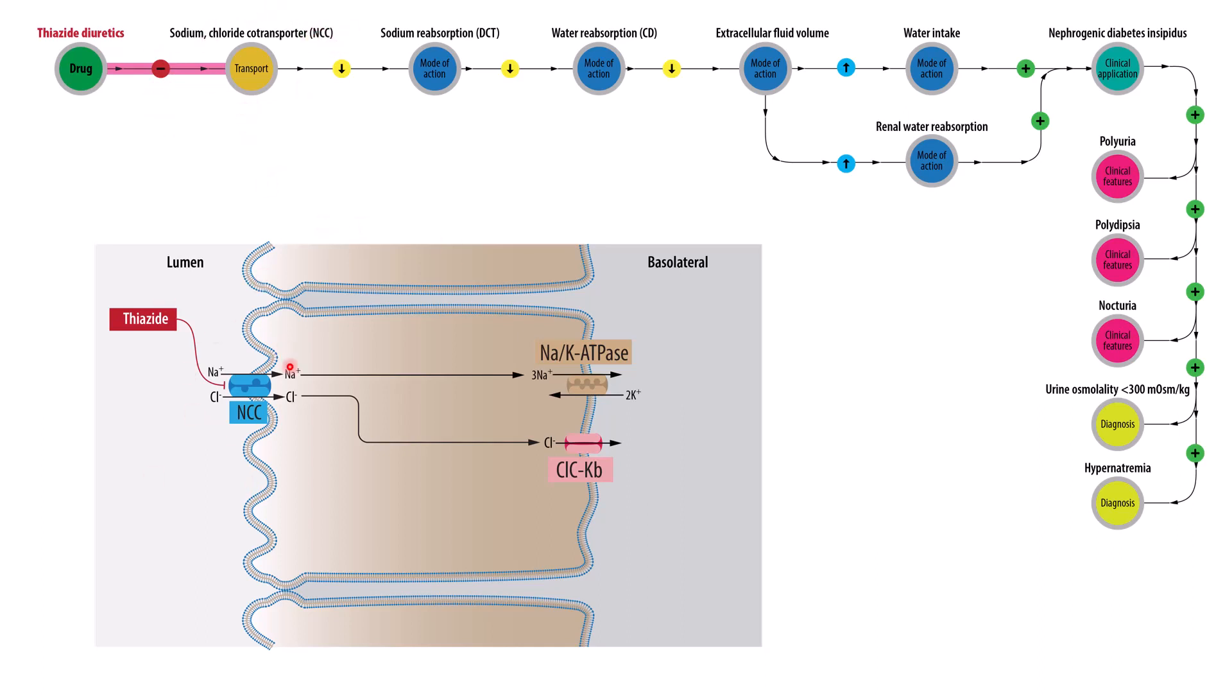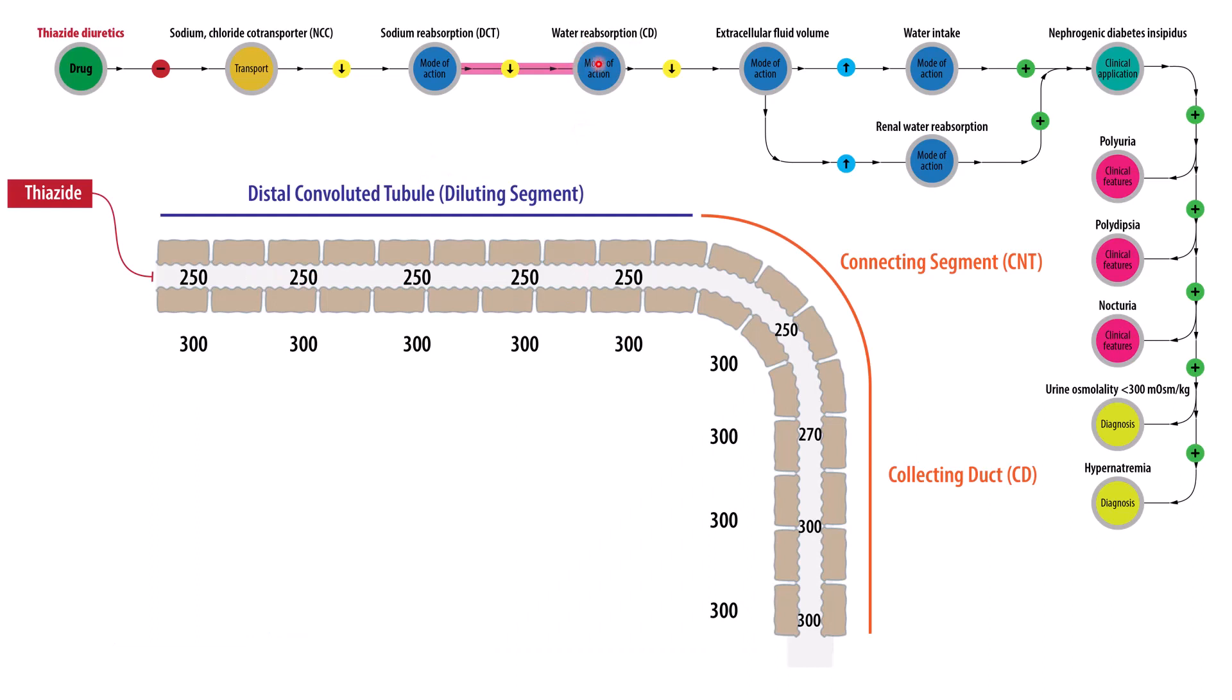And that's located in the distal convoluted tubule. Down here we have a diagram of that. So we have the NCC co-transporter in the apical membrane, which transports one sodium and one chloride. And then that sodium is then reabsorbed across the basolateral membrane via the sodium potassium ATPase, while the chloride is reabsorbed by a chloride channel. With that, there's a decrease in the sodium reabsorption along the distal convoluted tubule. And that's what sets up the decrease in water reabsorption along the collecting duct.